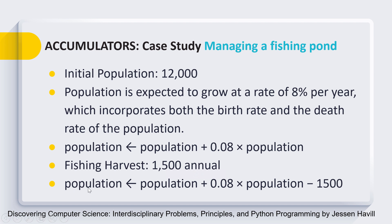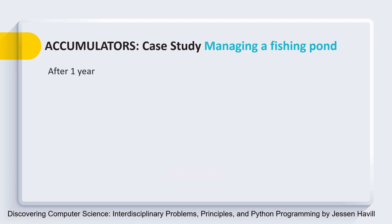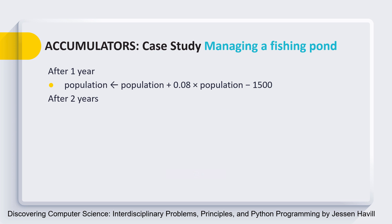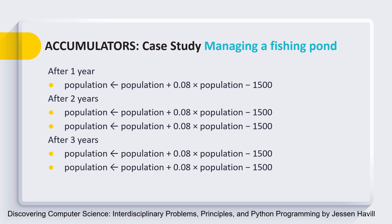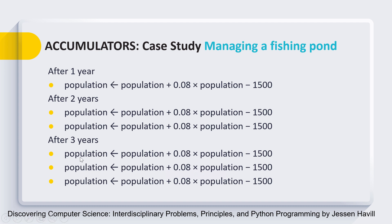With this formula, we can find the population after each year. To find the population after one year, we apply the formula once. For two years, we apply it twice — the result after year one becomes the input for year two. For three years, we run the same statement three times. So you have enough logic now to build a loop that computes the population for any number of years.